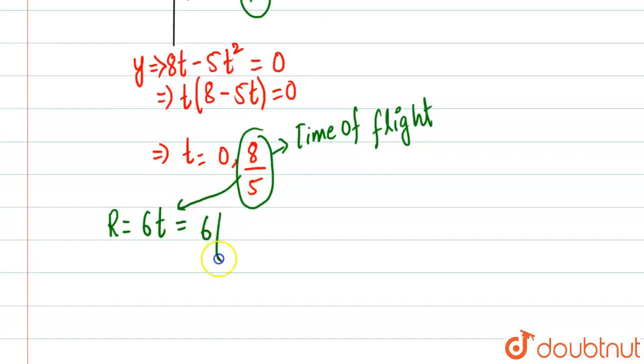So we'll put 6 × 8/5, which will be equal to 8 × 6 is basically 48 divided by 5.